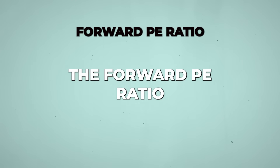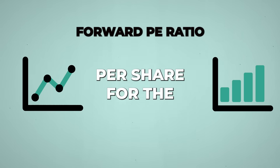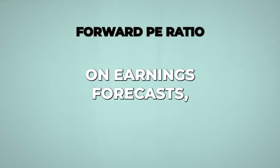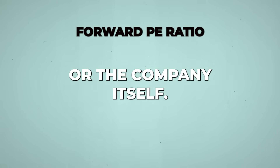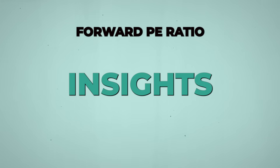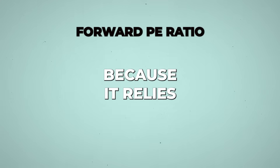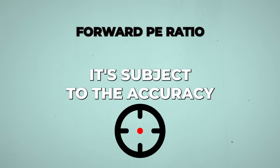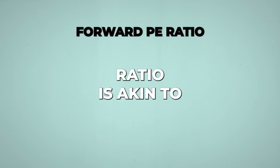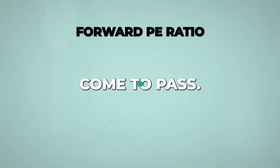In contrast, the forward P-E ratio is calculated by dividing the current stock price by the projected earnings per share for the next 12 months. This ratio is based on earnings forecasts, either by analysts or the company itself. Since it's looking ahead, the forward P-E can offer insights into the company's expected growth and performance. However, because it relies on estimates, it's subject to the accuracy of those predictions. Using the forward P-E ratio is akin to navigating with a forecast — it's based on expected conditions that may or may not come to pass.